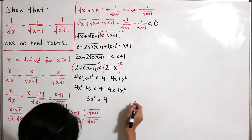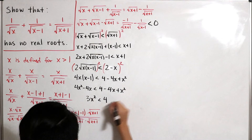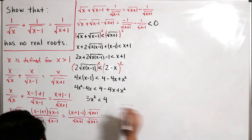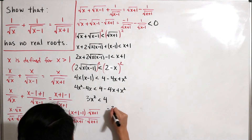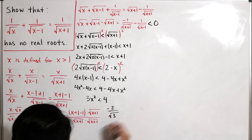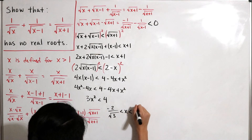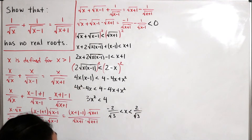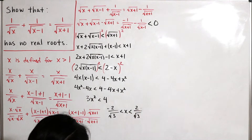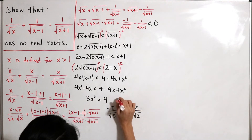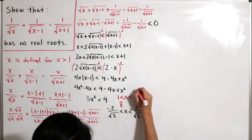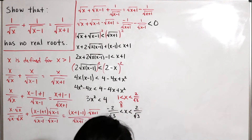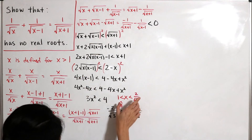Solving 3x² < 4, we get the compound inequality: negative 2 over the square root of 3 is less than x, less than positive 2 over the square root of 3. Since x is strictly greater than 1, we disregard the negative bound and write the compound inequality as 1 less than x less than 2 divided by the square root of 3.